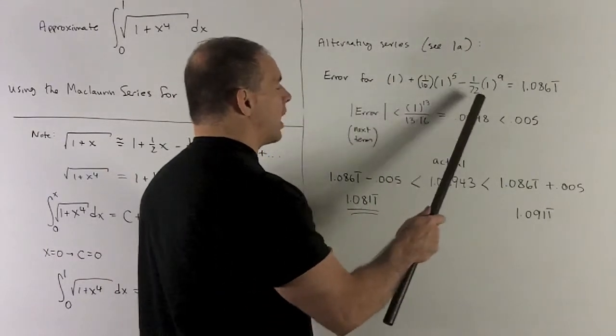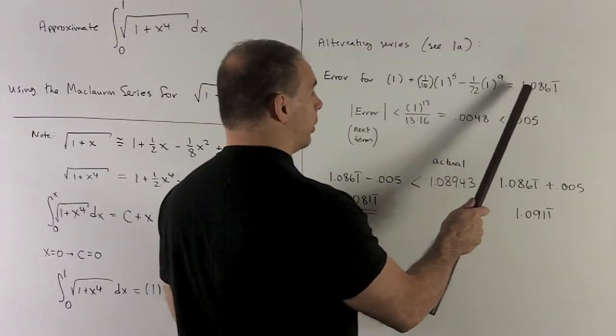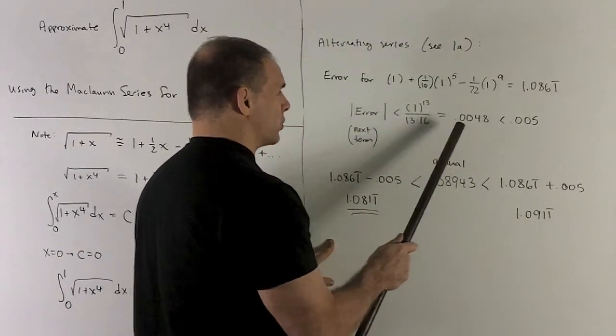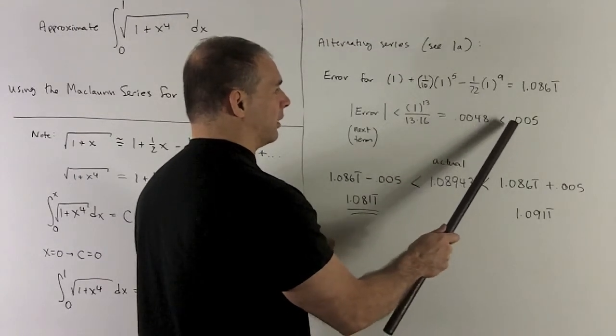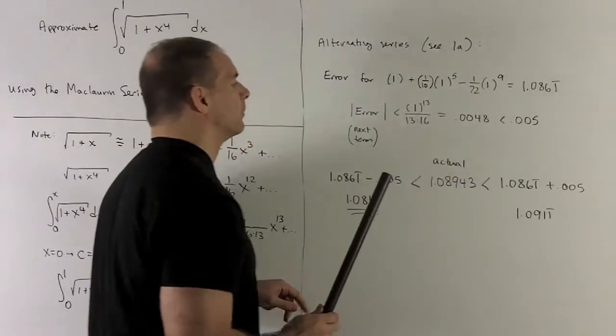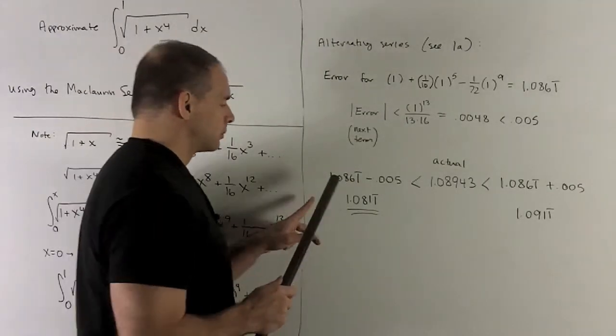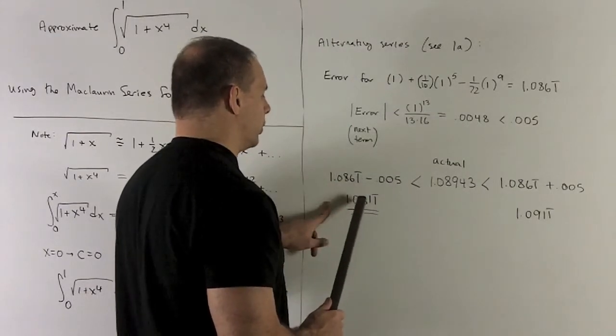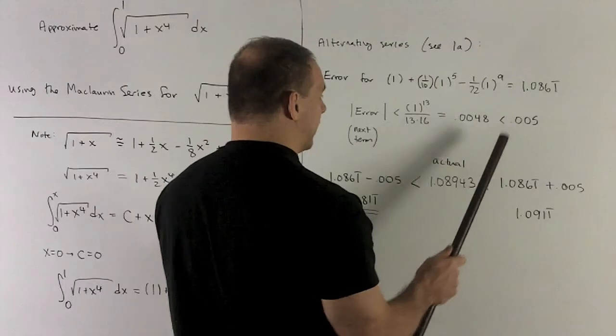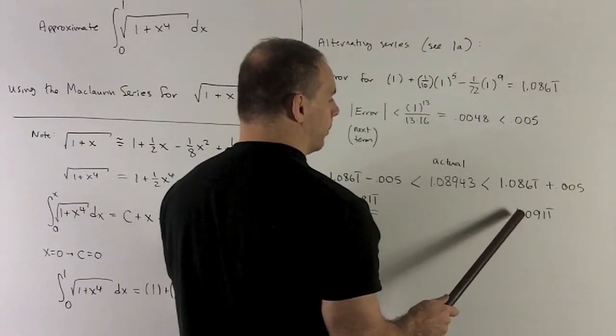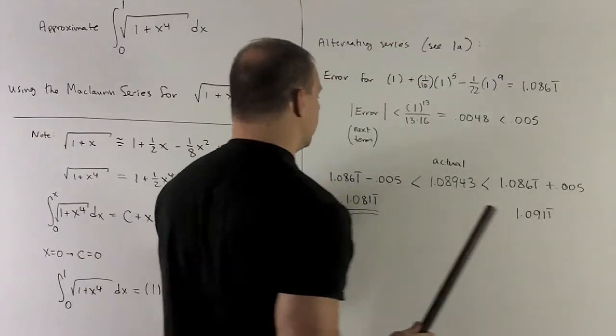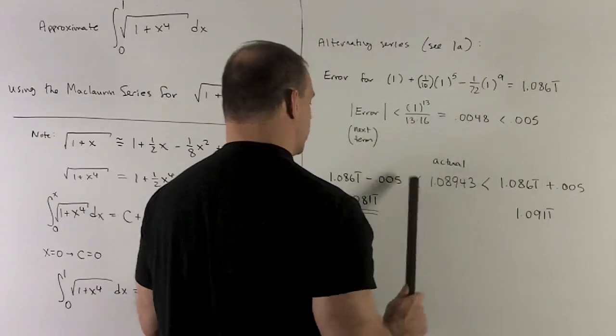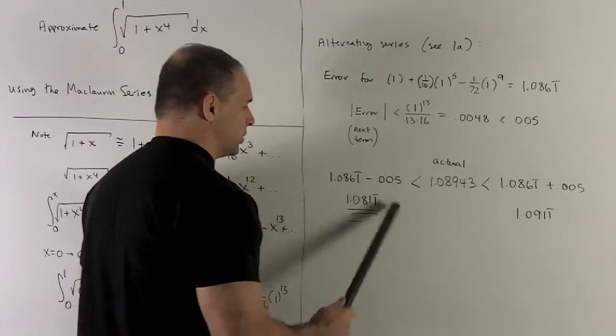So, what's that going to say? Well, I'm going to add these up. This is going to give us our estimate, 1.0861 repeating. The error is going to be bounded by the next term. That's going to be 0.0048. And we get a nice clean bound if we just change that to 0.005. So, we're going to have, as a lower bound, our estimate minus 0.005. So, it's going to be 1.081 repeating. And then if I add the 0.005 to our estimate, we get 1.0911 repeating. The actual is going to be 1.08943. And you notice our actual is going to wind up being between our bounds.